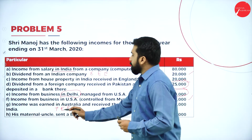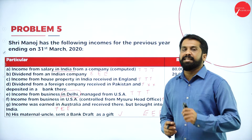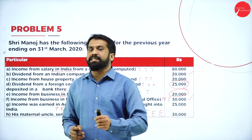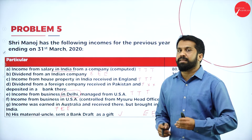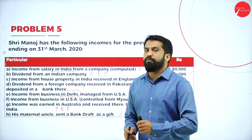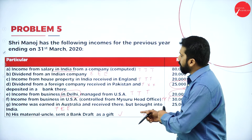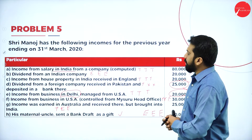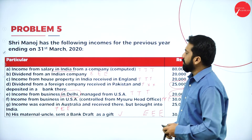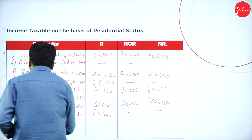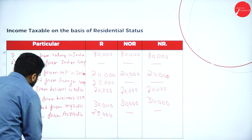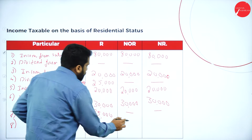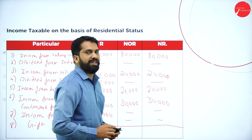The last item: maternal uncle sent a bank draft as a gift. As I told you, gifts from relatives are exempted irrespective of amount; the 30,000 gift from a relative is fully exempt. So gift received: nil, nil, and nil for all three persons.